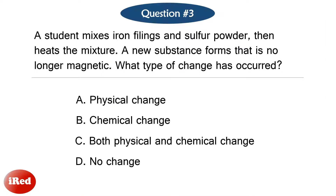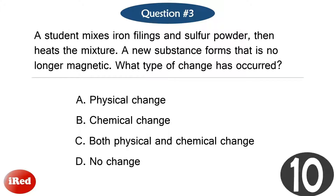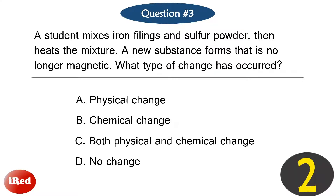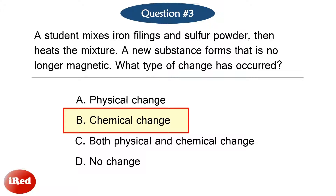Question number three. A student mixes iron filings and sulfur powder, then heats the mixture. A new substance forms that is no longer magnetic. What type of change has occurred? The correct answer is letter B, chemical change.